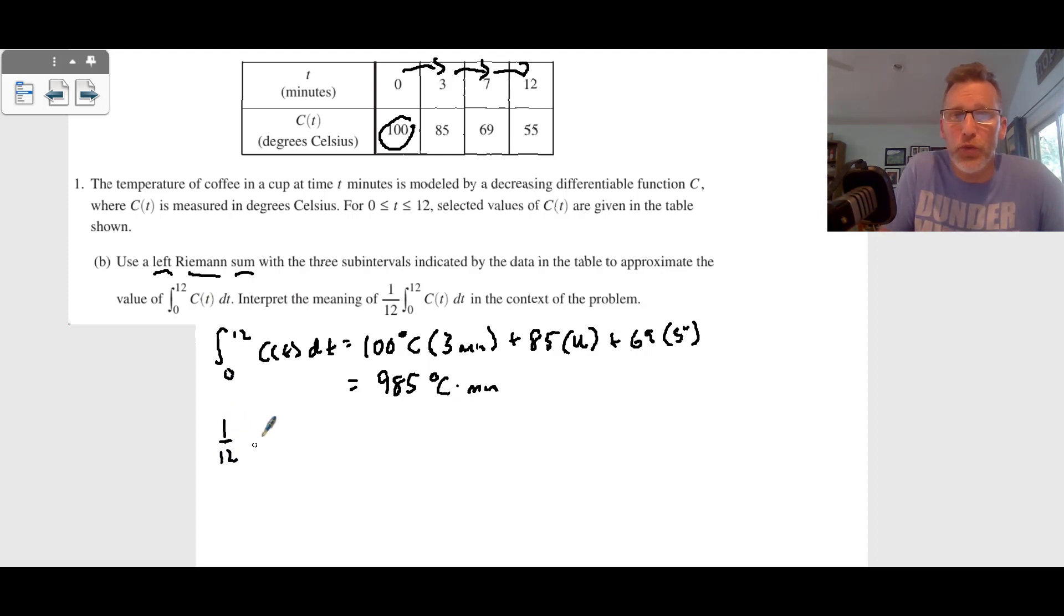They ask us for one twelfth of zero to 12 of C of T, DT, which means this actually has a meaning. We can interpret the meaning of this in context of the problem. We take this 985 degrees Celsius divided by 12. We didn't have to do that, but that is about 82.083 degrees Celsius. And what is this?